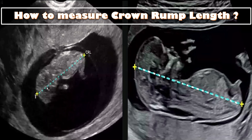Both crown and rump should be clearly visible for adequate placement of the calipers. The calipers should be placed on the outer border of the skin covering the crown and the rump.